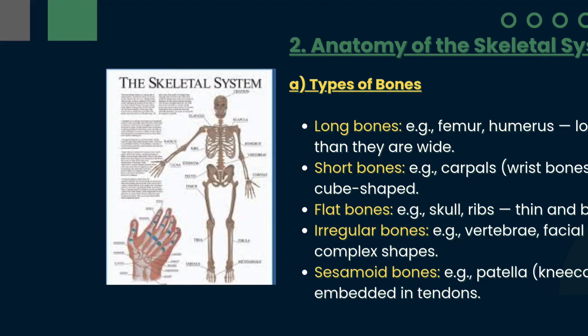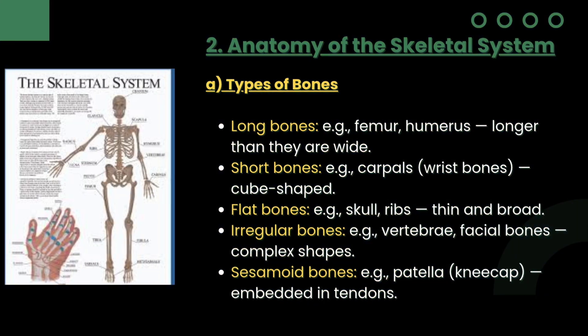Next, coming to the anatomy part. First, it is divided into types of bones: long bones (example: femur), short bones (example: carpal), flat bones (example: skull or ribs), irregular bones (example: vertebrae), and sesamoid bones (example: patella).